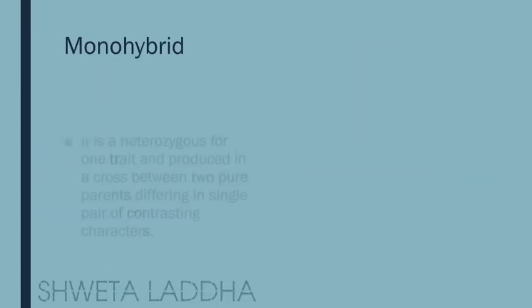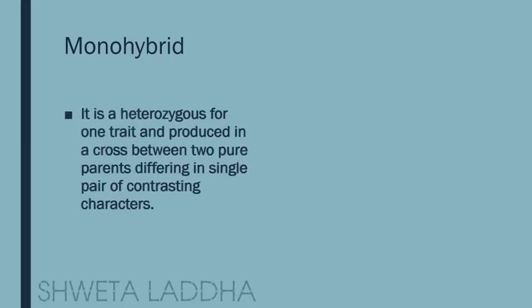Now let us see what is a monohybrid. Mono means single, hybrid means heterozygous condition — it is heterozygous for only one trait. It is produced when a cross is made between two pure parents having a single pair of contrasting characters.